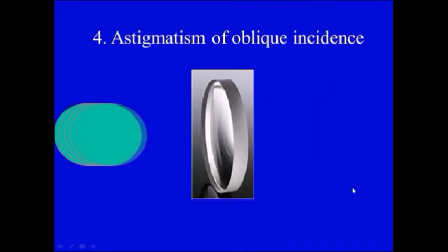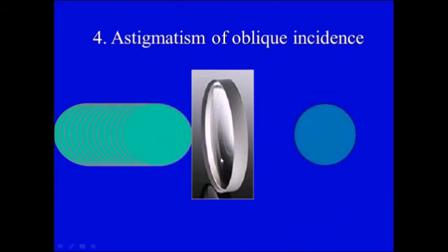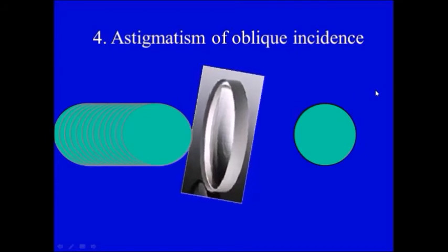Then we come to astigmatism of oblique incidence. If rays hit perpendicular to a surface lens then the focus will be circular. But if you tilt the lens the focus will be oval. Why is that?